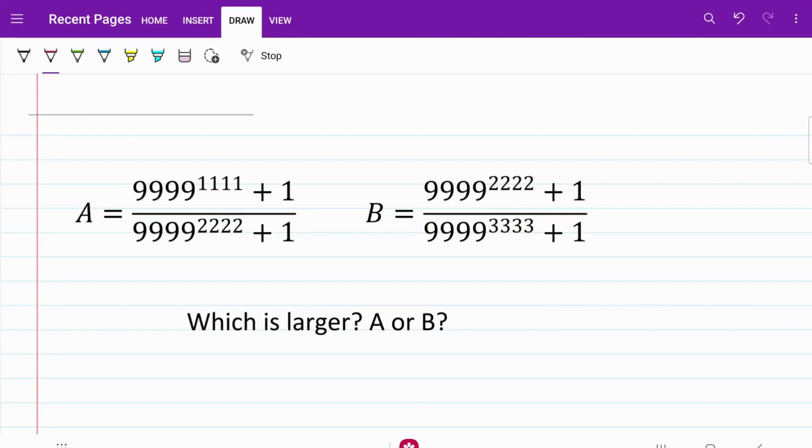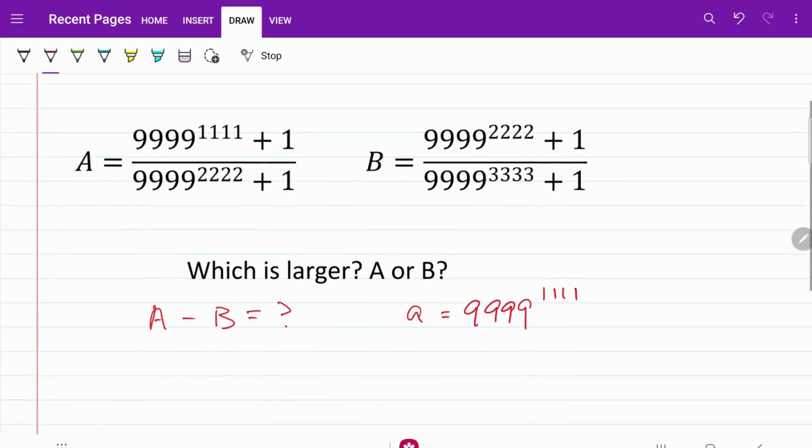We notice that both fractions A and B consist of 9999 raised to a certain power. So in order to do a comparison, I'm going to try to work out the value of A minus B. But instead of trying to figure out the exact value, which is probably impossible, I'm just going to go ahead and let a equal to 9999 raised to the power of 1111.